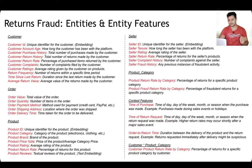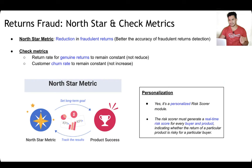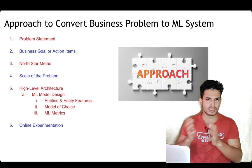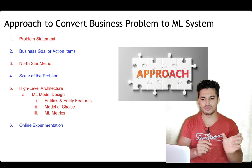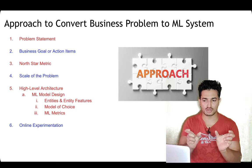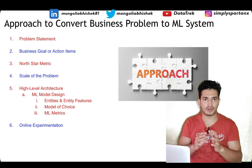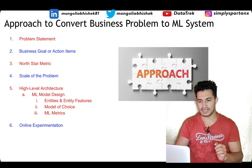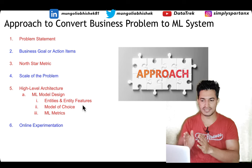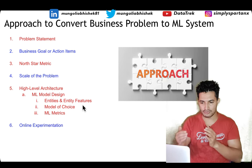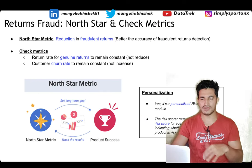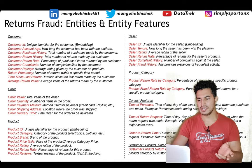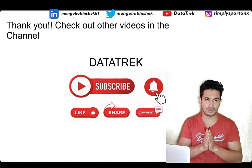That brings us to the end of this ML design video. We took the business problem of reducing return fraud and applied a structured approach: understanding the problem statement and business goal, defining north star and check metrics, determining scale, designing the high-level architecture, identifying ML models and features, choosing evaluation metrics, and running online experimentation before scaling. In the next video we will cover counterfeit goods fraud. Please like and subscribe and stay tuned for more updates.